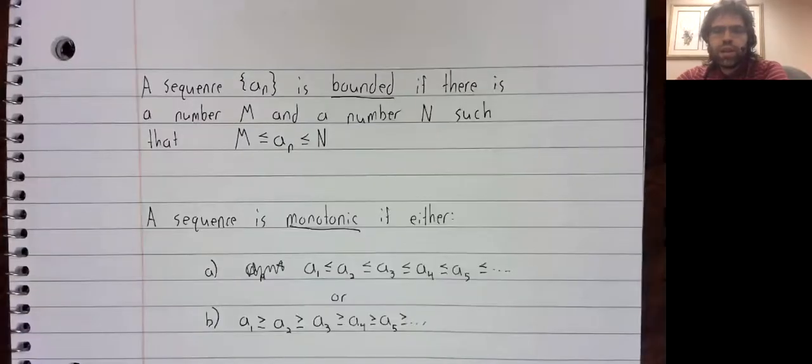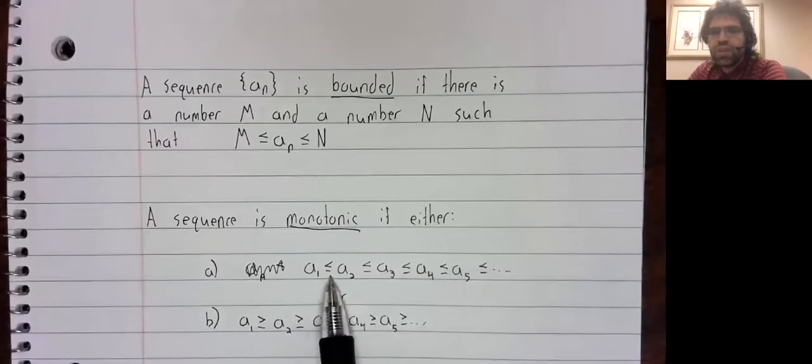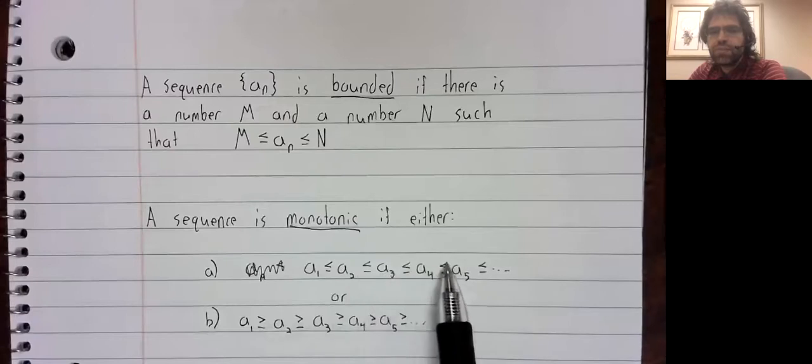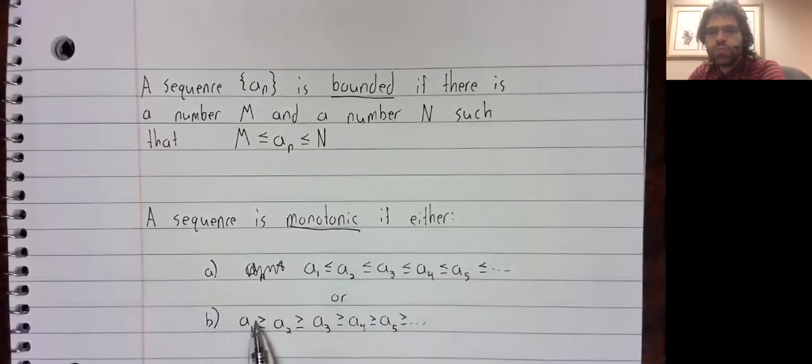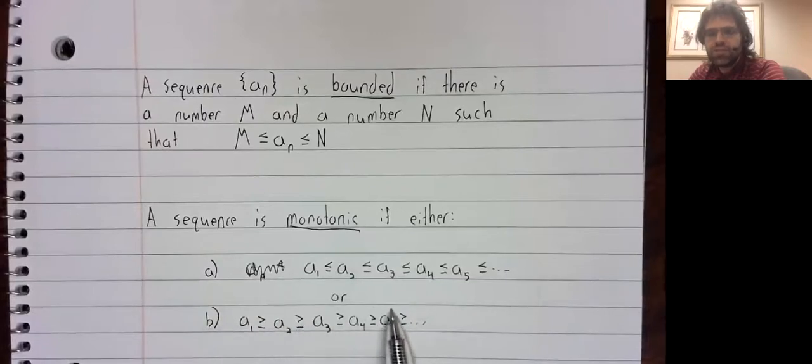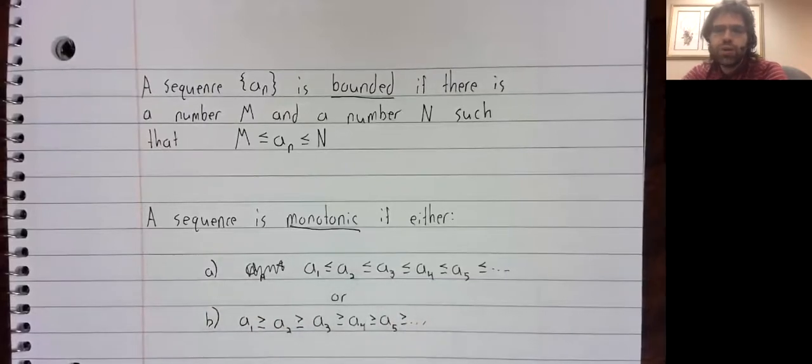A sequence is monotonic if either the terms increase as you go up, or the terms decrease as you go up.